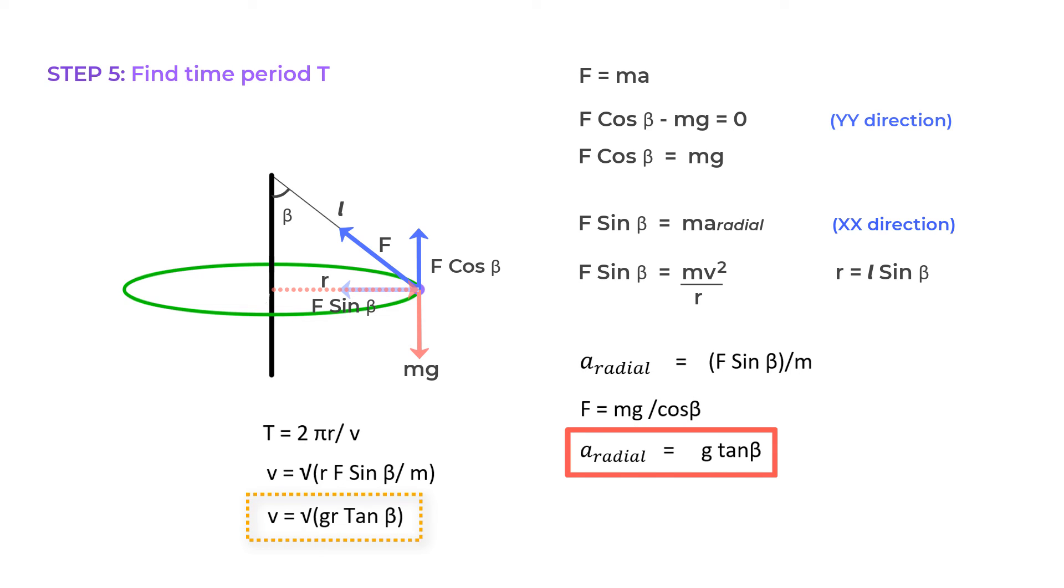Now, we can use this value of V here to find the time period T as T equals 2 pi times the square root of L cos beta upon G. And this formula tells us a lot.